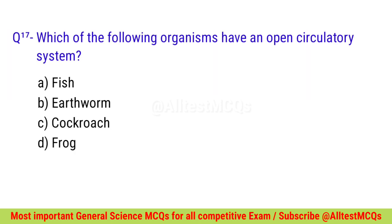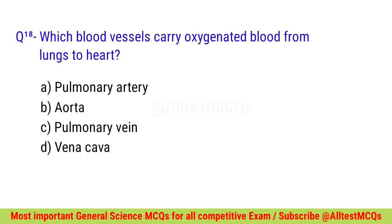Question number seventeen: Which of the following organisms have an open circulatory system? Right option is C — Cockroach. Question number eighteen: Which blood vessels carry oxygenated blood from the lungs to the heart? Correct option is C — Pulmonary vein.